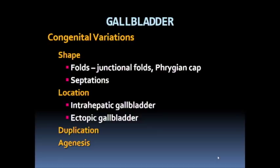There are quite a few congenital variations with the gallbladder. More commonly, we see variations in the shape of the gallbladder, including folds, junctional folds or phrygian cap, and septations. In addition, we can see congenital variations in the location of the gallbladder, including intrahepatic or ectopically placed gallbladder, and other anomalies like duplication or agenesis of the gallbladder.